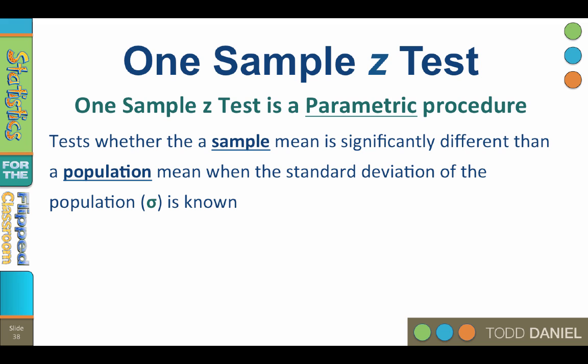In order to use a one-sample z-test, you need one continuous or scale dependent variable, a population mean, and a population standard deviation. This test cannot be done in SPSS with drop-down menus, although I have a video showing how to use SPSS syntax to do it.